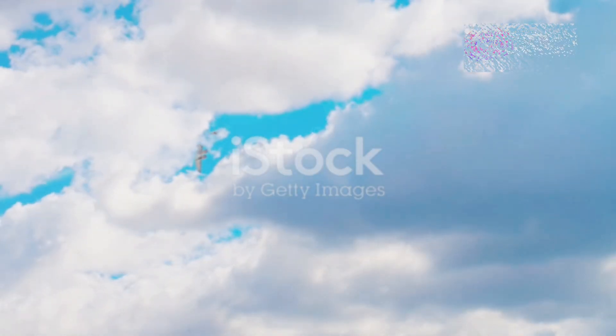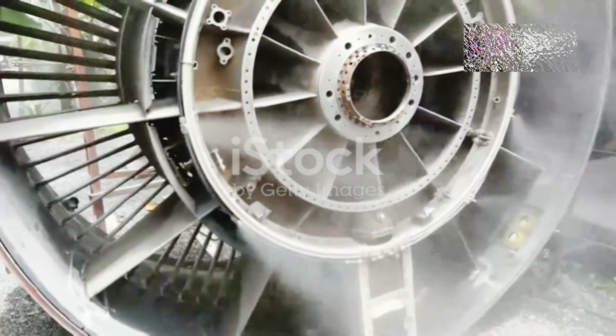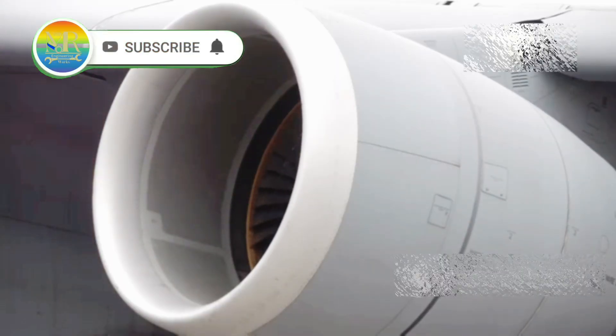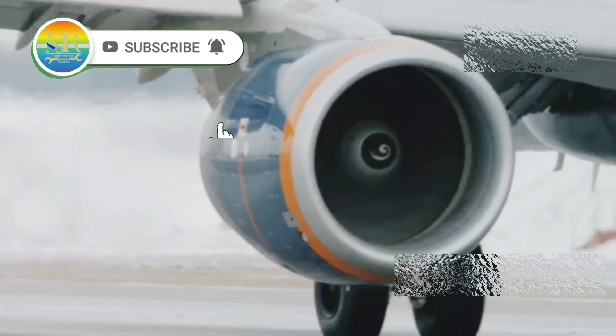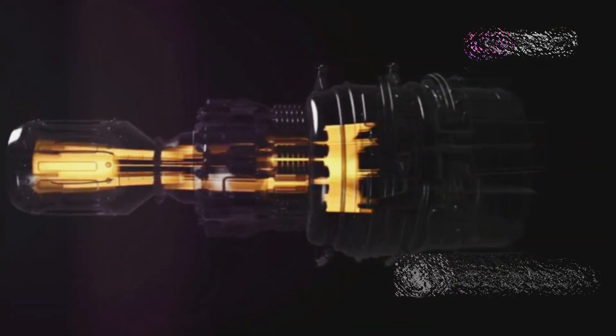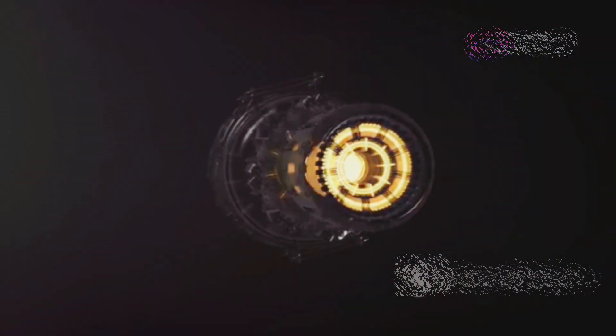Have you ever seen a huge airplane soar through the sky and wondered, what's that roaring sound? That, my friends, is the sound of a jet engine hard at work. In simple terms, a jet engine is like a really powerful fan. It sucks in air, mixes it with fuel, burns the mixture and then blasts it out the back, creating a whole lot of push, which we call thrust.